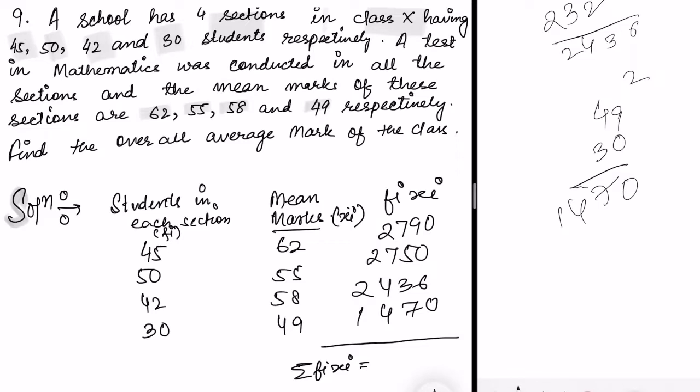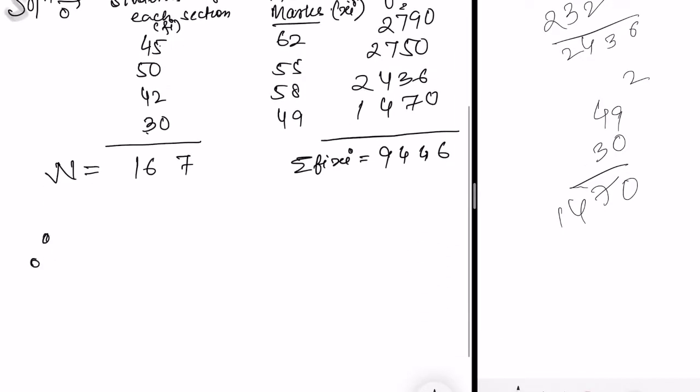The summation of fi×xi: add all these numbers. 6, 7, 8, 9 plus 5 is 15 plus 9 is 24. Carrying forward: 2, 3, 4, 5, 6, 7, 8, 9, you get 9446. This is the total. Now find summation of fi: 45 plus 50 plus 42 plus 30 equals 167. This is your N. Therefore, average mark overall average mark.